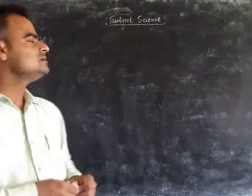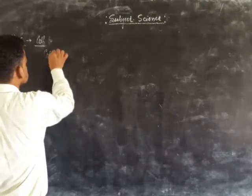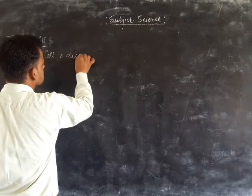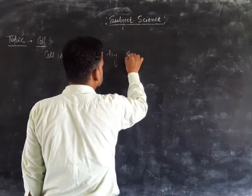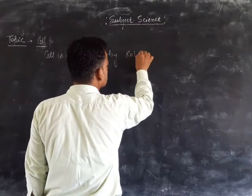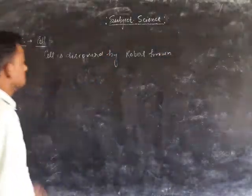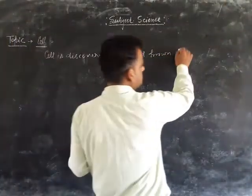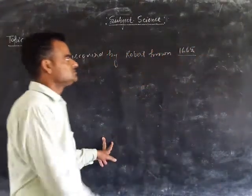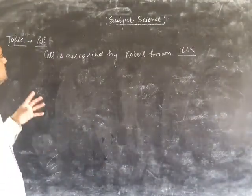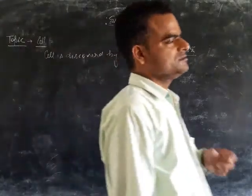What is science? Science is discovered by cell. Cell is discovered by Robert Brown. The cell is discovered by Robert Brown in 1565. We discovered cell. That is the cell.